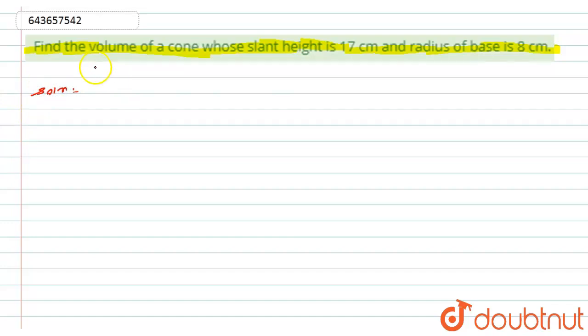In this question, we have to find the volume of the cone whose slant height is given as 17 centimeter, meaning l equals 17 cm, while the radius of the base is 8 centimeter, meaning r equals 8 cm.